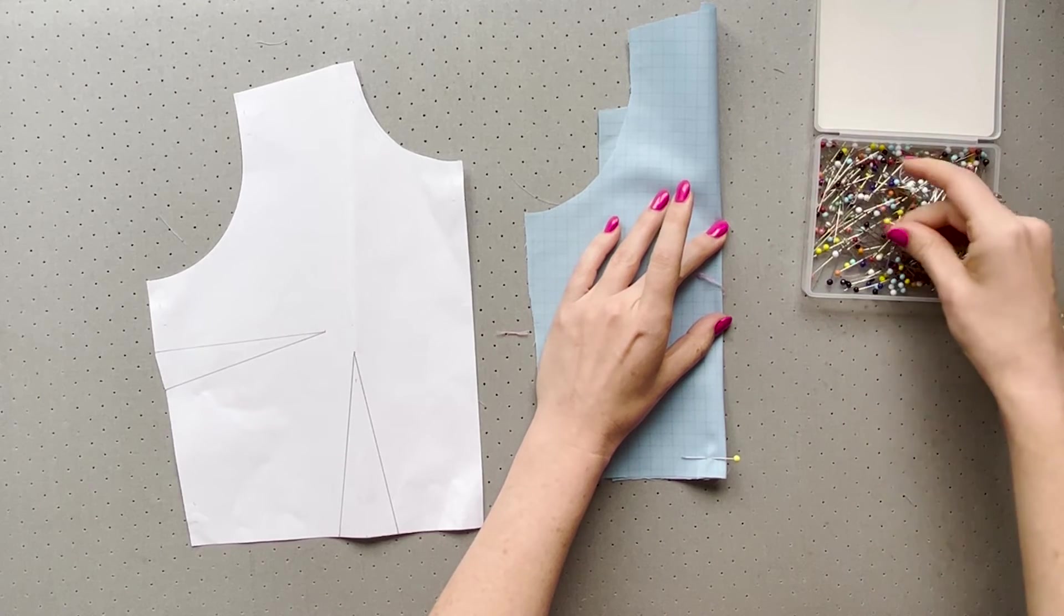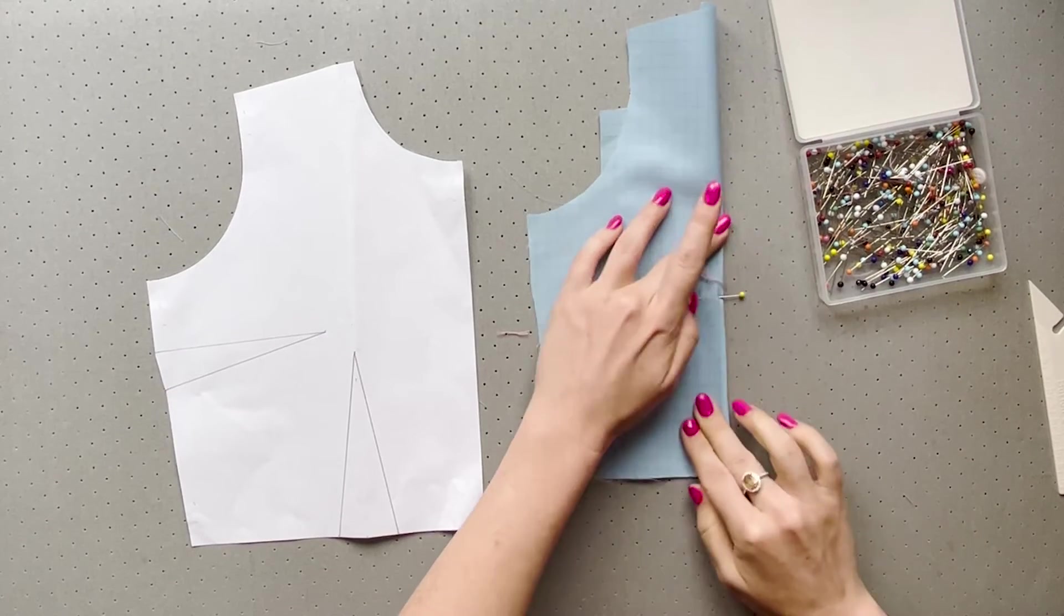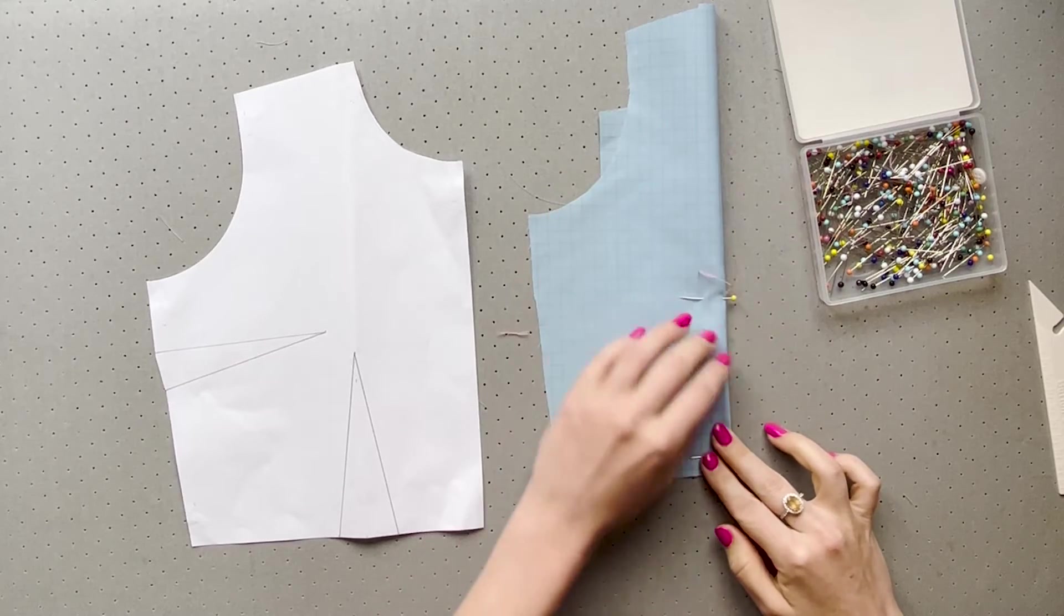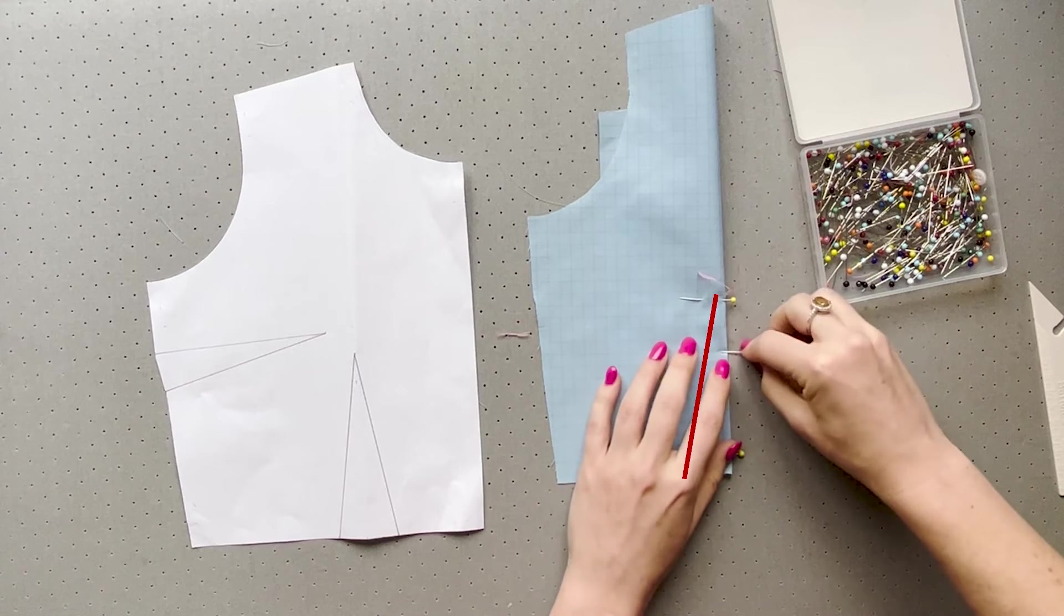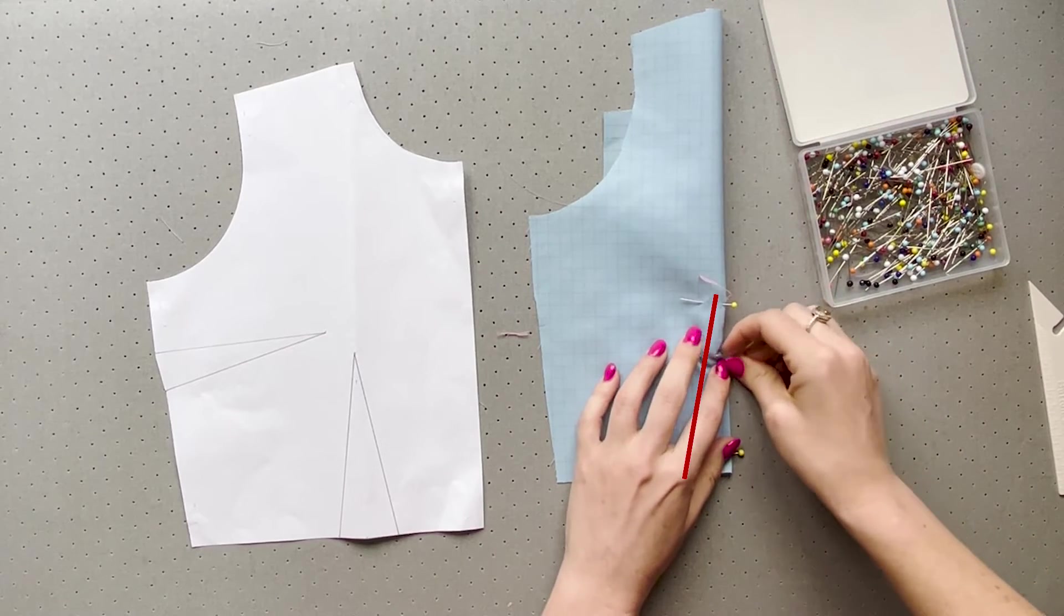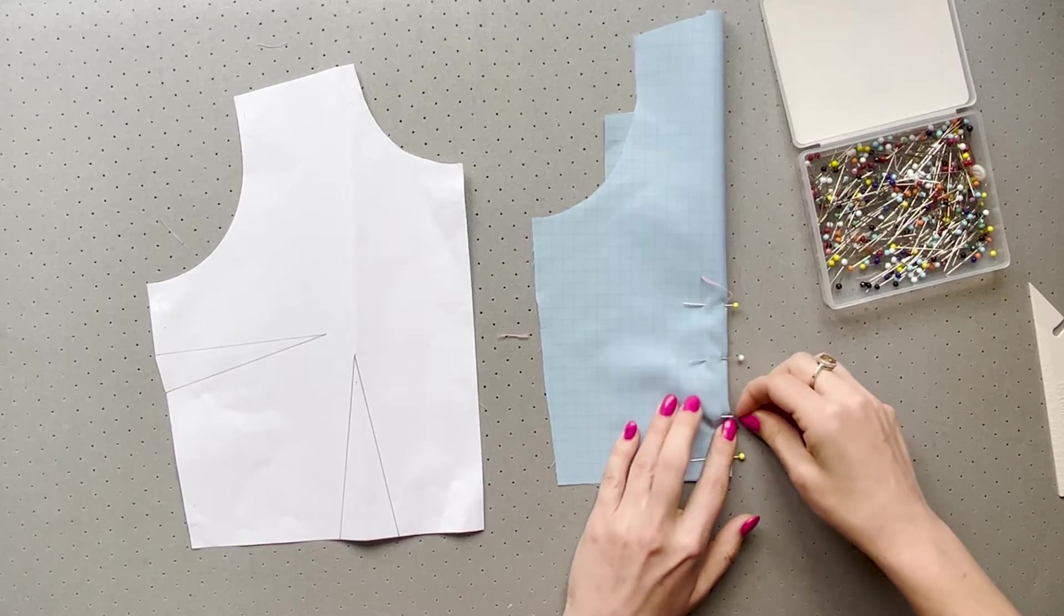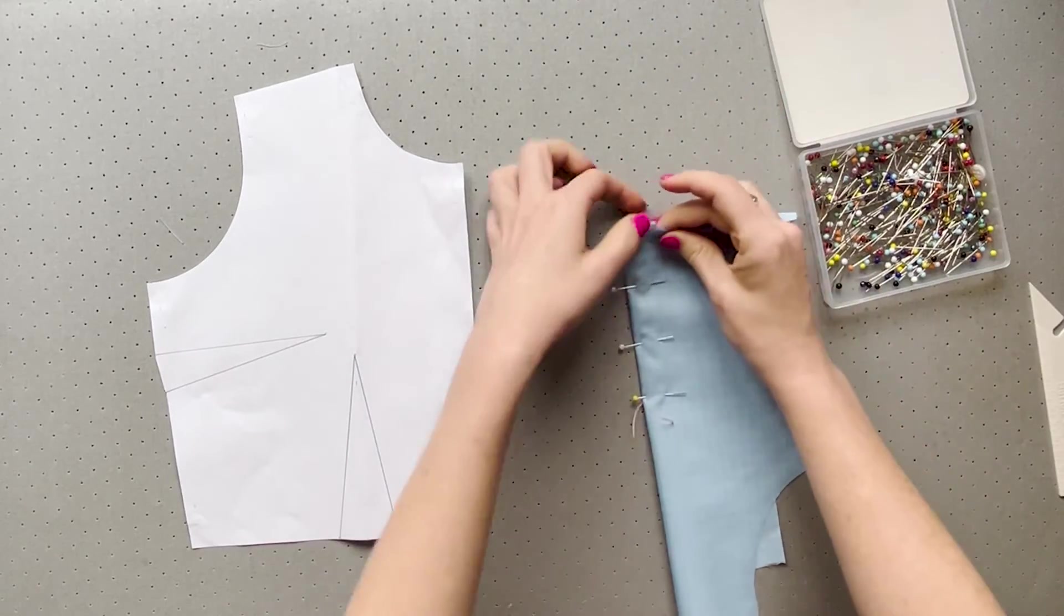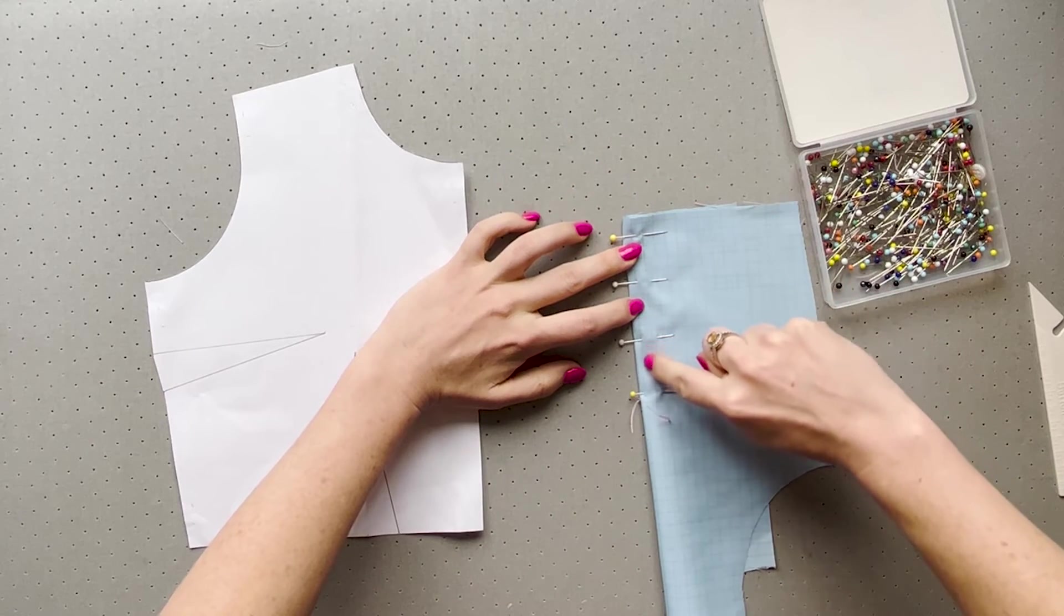Once you have that, pin it in place horizontally like this. Again, this is where I would usually use a yellow pin to mark the end of the dart so later at the machine I can easily spot where I'm heading to. Our stitch line will be from the notches of the dart legs to the dart point at the thread. As this is an example, I'm going to use a contrast thread so it is visible to you but you want to use a thread that matches your fabric color or as close as possible.